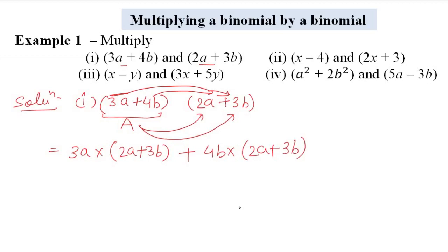We multiply the first term of the first expression by each term of the second expression, then the second term. So 3a × 2a = 6a², 3a × 3b = 9ab, and 4b × 2a = 8ab.